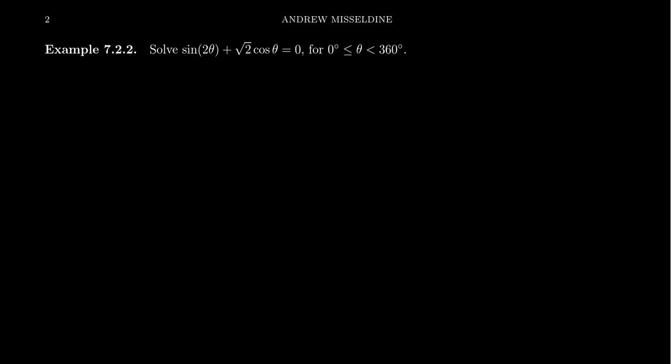If we do that, remember sine of 2 theta is equal to 2 sine theta times cosine theta plus square root of 2 times cosine of theta. This equals 0. Notice now the angles in play are only theta.